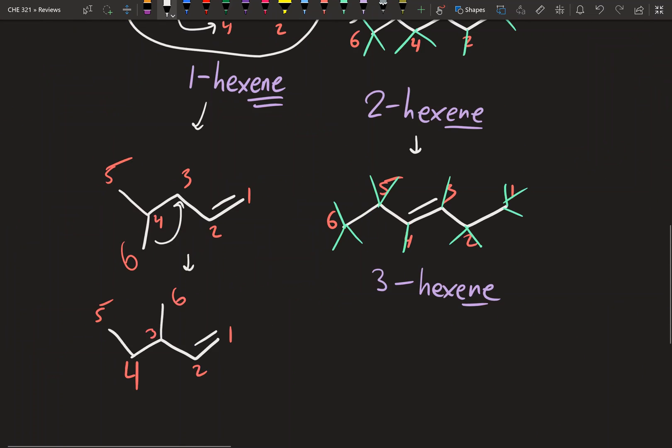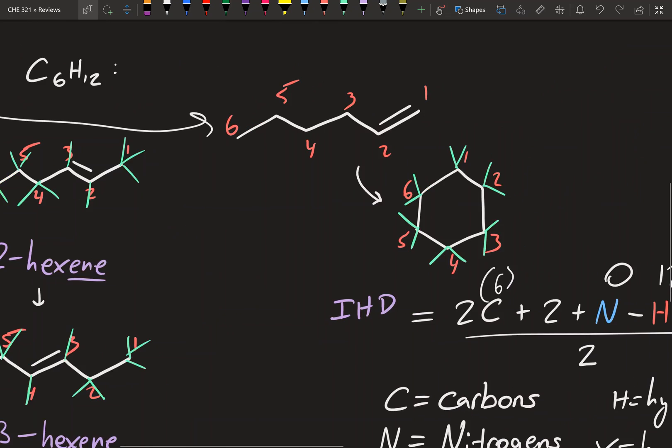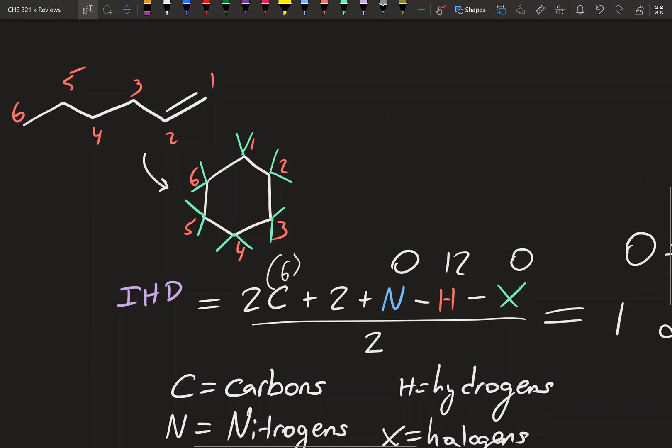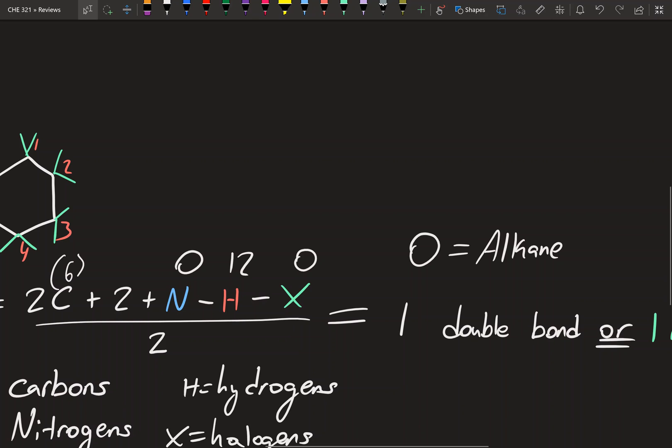Now there are more constitutional isomers for C6H12, but we're not going to be covering that in the rest of this video. We're going to go more in depth into IHD in the next video and how to use it to help you solve the problems. And you will be able to see how it's a really quick and easy way of getting a good 5 points on the test, whether it's a multiple choice or short answer question.